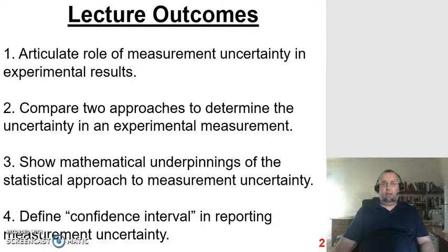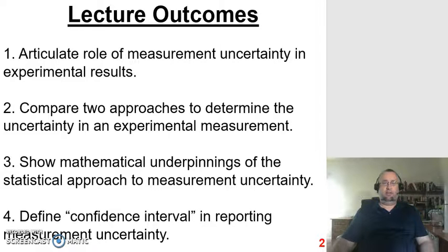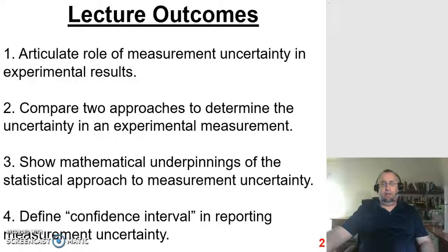There are going to be four lecture outcomes addressed in this presentation. First, I'm going to articulate the role of measurement uncertainty in experimental results, typically in the reporting of engineering experimental results. Second, I'm going to describe and compare two different approaches to determine uncertainty in experimental measurements. Third, I'm going to focus on the statistical approach and show you the mathematical underpinnings. Finally, I'm going to define a confidence interval and how you use it in reporting uncertainty.